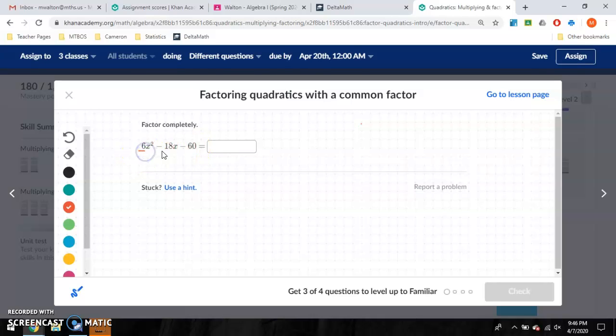I have a 6x squared minus 18x minus 60, and as I look at this, I have the number 6, I've got the number negative 18, and then I have negative 60. And looking at those, all three of those, 6, 18, and 60, those are all divisible by 6. So I'm going to start this problem by factoring out a 6.